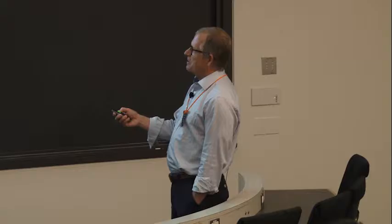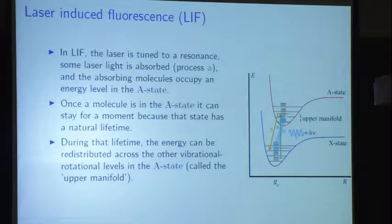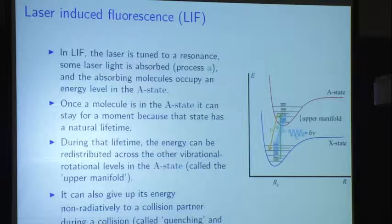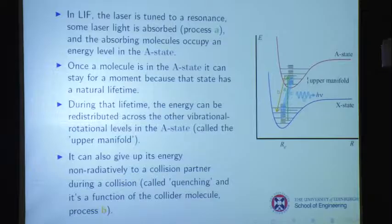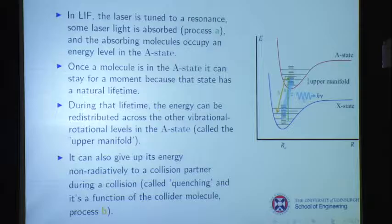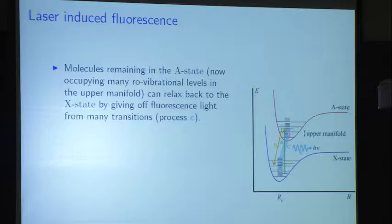During that excited state lifetime, other things can happen. One of the things that happens is energy is redistributed across vibrational-rotational levels up in the A state, so we get what we call an upper manifold — a whole collection of states that are populated once we've pumped the molecule up there. Once it's up there, it can also give off energy to collisions — that's called collisional quenching. A collider molecule doesn't actually have to collide; a near miss can cause it to lose its energy. But molecules remaining in the A state can relax back to the X state, giving off light — process C.